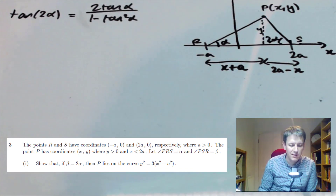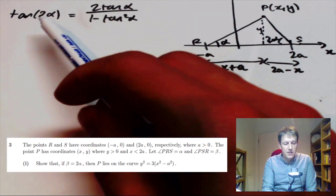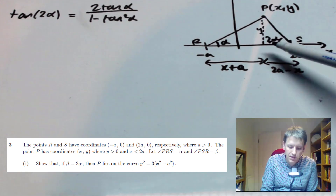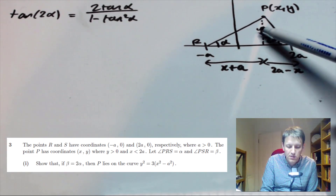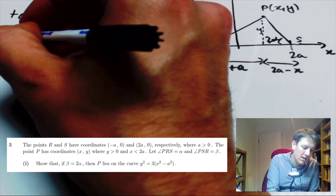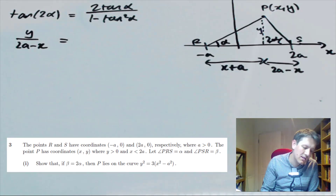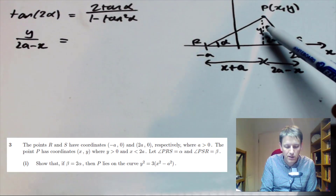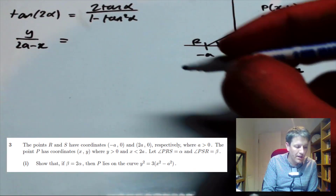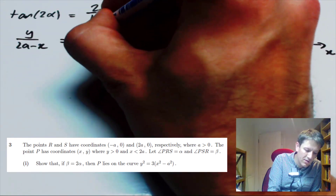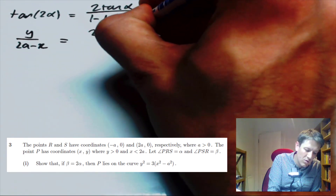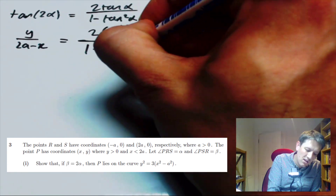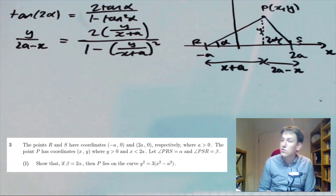With a good diagram and familiarity with the A-level syllabus, I can now write this down. tan(2α) is the opposite over adjacent, so y divided by (2a − x). Then 2 tan α over (1 − tan² α): tan α is y over (x + a), so I have 2 × (y / (x + a)) divided by 1 minus (y / (x + a)) all squared.